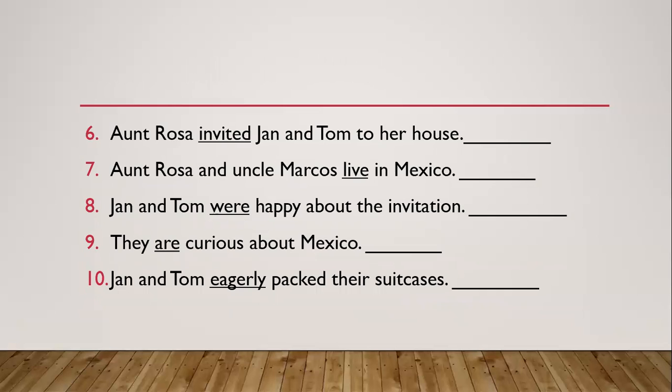Number seven: Aunt Rosa and Uncle Marcus live in Mexico. They physically are there, so 'live' is an action verb. Number eight: Jan and Tom were happy about the invitation. 'Were' is a linking verb — it does not express any action. Number nine: they are curious about Mexico. 'Are' is a linking verb; it does not express any action.